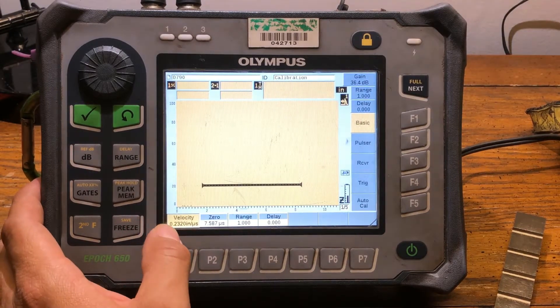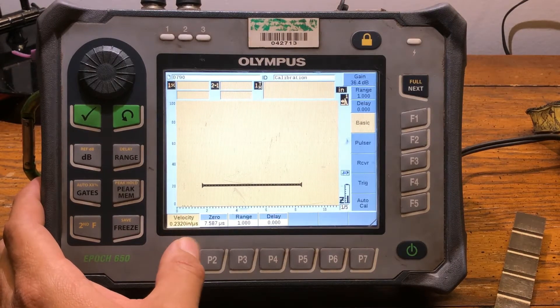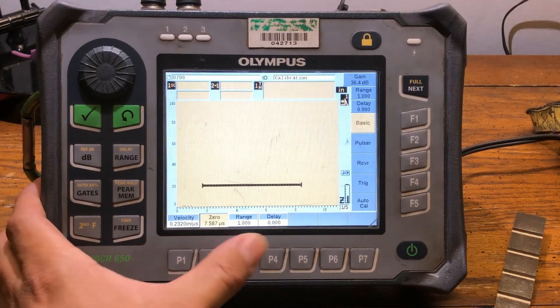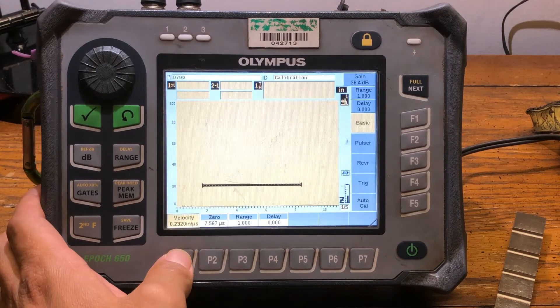For this purpose to calibrate, we're only gonna be using these two functions: velocity and zero. Our range is okay and our delay should be at zero.